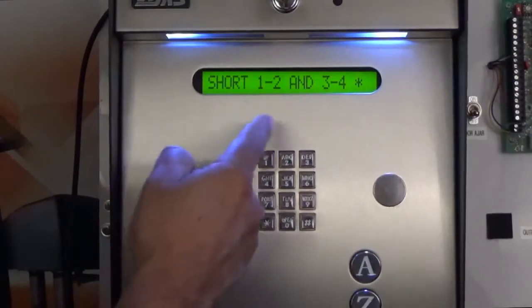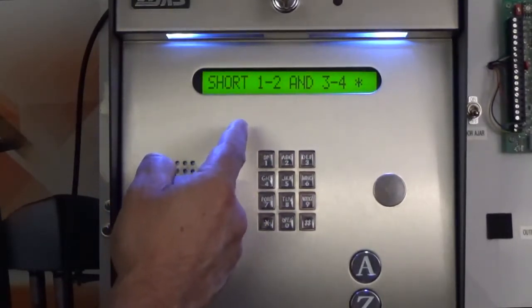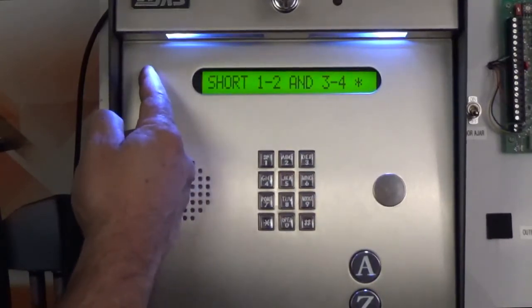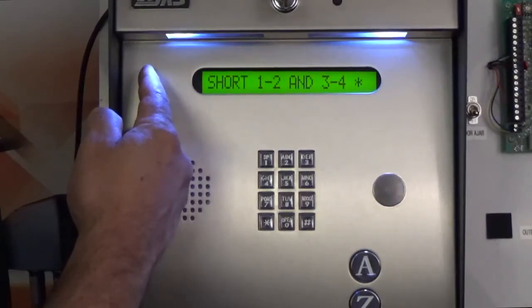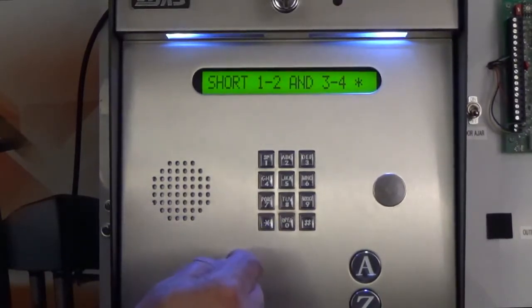The unit display will read short one and two and three and four, instructing us to put a jumper on the RS232 terminal strip between terminals one and two and three and four. We opted to put the jumpers at the end of the serial cable to test the entire assembly. Let's press star now to start the test.